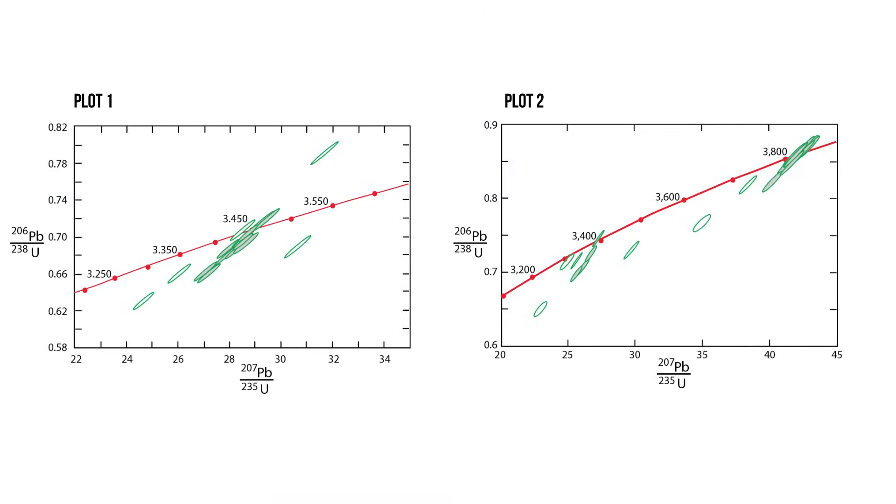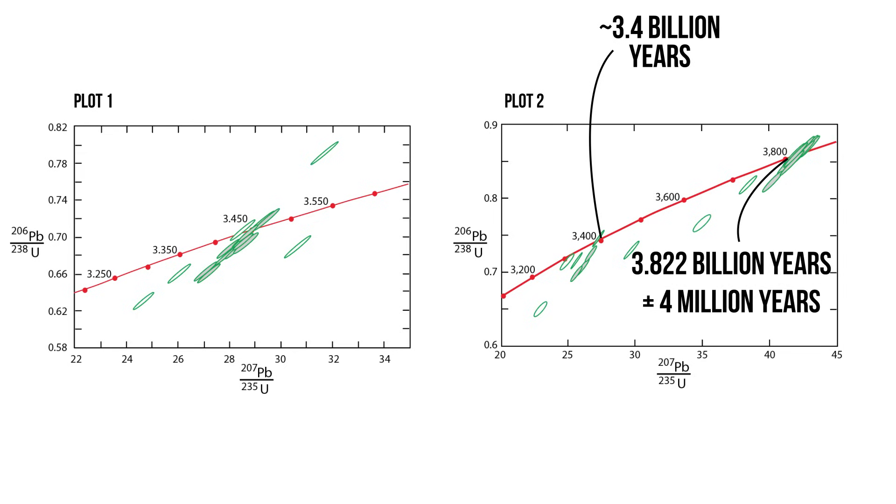The plot on the right shows two clusters of data, one at around 3.4 billion years ago, and another at 3.8 billion years ago. Notice that the age is given with a plus or minus, which describes the uncertainty of the age.